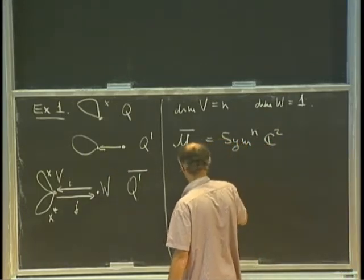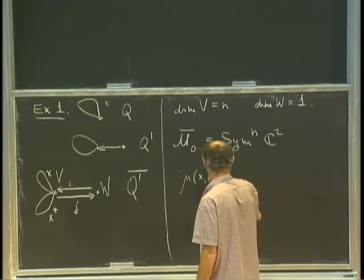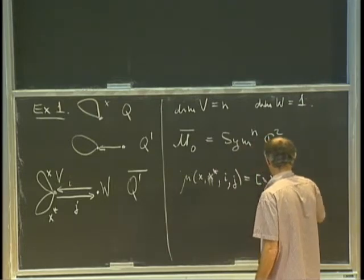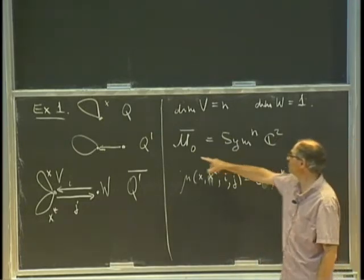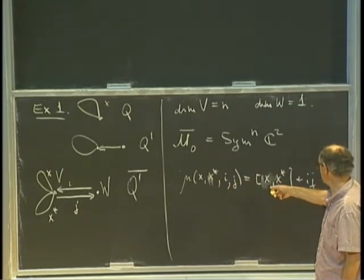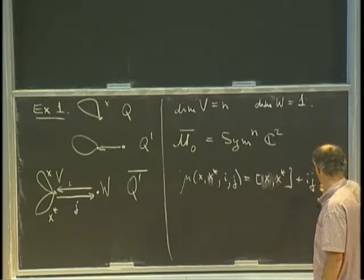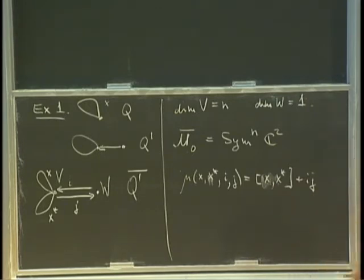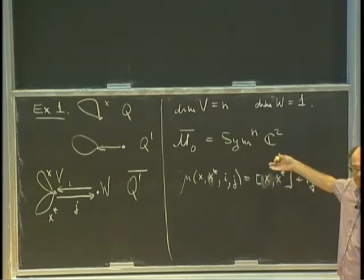The only point I should explain is that the moment map equation has the form: the commutator [X, X star] plus I·J equals zero. To define M bar, we take the zero fiber of this equation and mod out categorically by the action of G. When you take a categorical quotient — meaning you take closed orbits — if you look carefully, the equation being zero and the orbit being closed automatically implies that both I and J are zero, because there is a rescaling which prevents the orbit from being closed otherwise. So this term plays no role for closed orbits, and you just say two matrices commute — which we discussed last time.